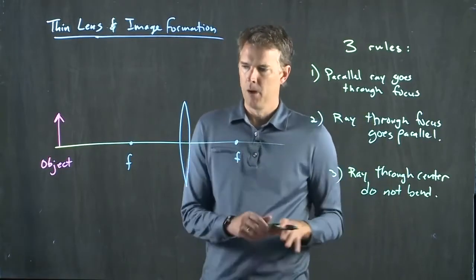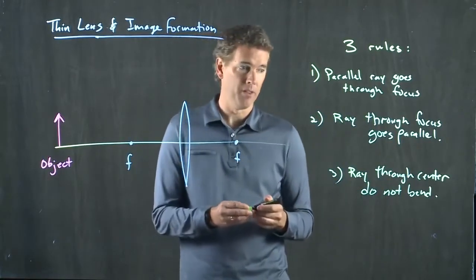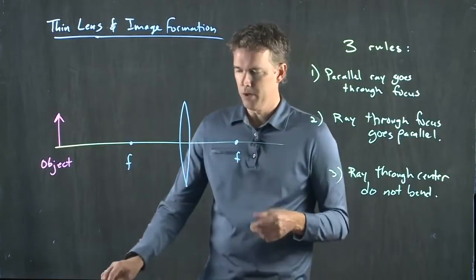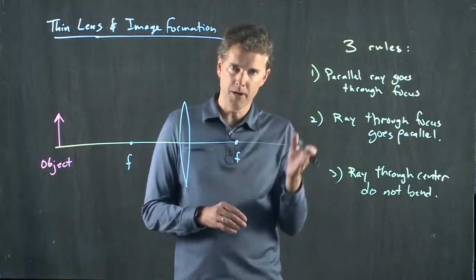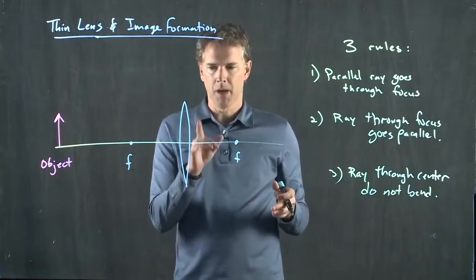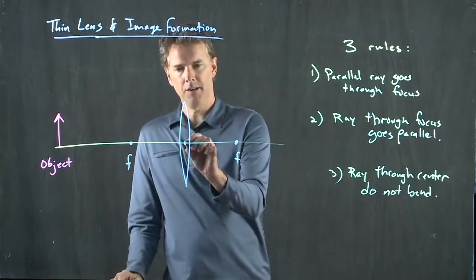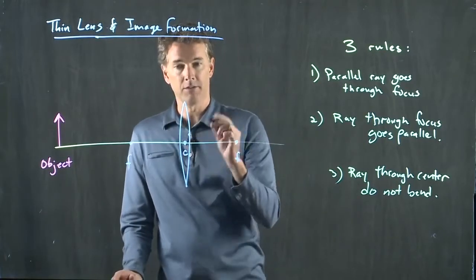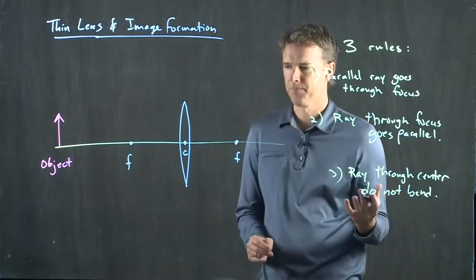Same rules that we had before. We got to identify where the center is. We knew where it was for a curved mirror, it was the center of that radius of curvature. But here, for a thin lens, the center is in fact right in the center of the lens.